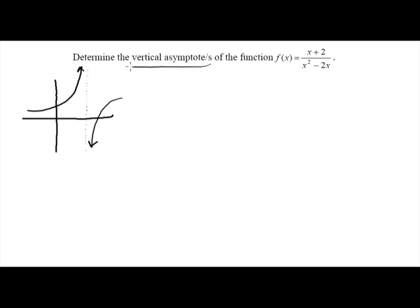But given a function, how do we know the vertical asymptote? How do we find the equation of the vertical asymptote? Given a function, you can identify the domain of the function, and the domain is basically all the numbers that have a value on the function.